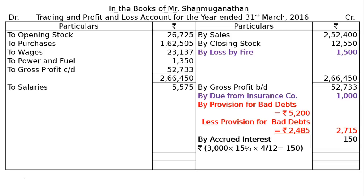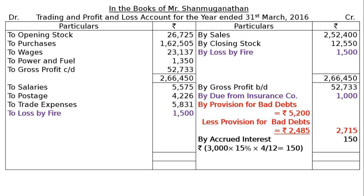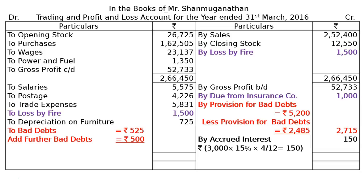On the debit side of the Profit and Loss Account: To Salaries Rs. 5,575; To Postage Rs. 4,226; To Trade Expenses Rs. 5,831; To Loss by Fire Rs. 1,500 (the full cost of goods destroyed). To Depreciation on Furniture at 10% per annum — 10% of Rs. 7,250 = Rs. 725. To Bad Debts: Rs. 525 from the trial balance plus further bad debt of Rs. 500, totaling Rs. 1,025 in the final column.